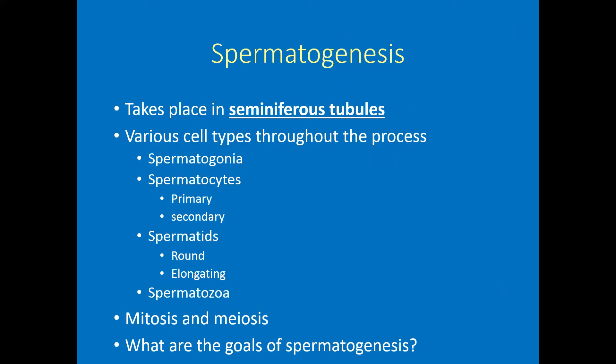Let's talk about spermatogenesis. I've filled in the blanks in this lecture with bold underlined words — you can fill those in now, such as 'seminiferous tubules' up here. Spermatogenesis takes place in the seminiferous tubules, located within the testes. Throughout spermatogenesis we have various cell types, starting from the beginning of the process all the way until we get to spermatozoa. Initially we have undifferentiated stem cells, which become our spermatogonia. Then spermatogonia undergo mitotic divisions to produce spermatocytes.